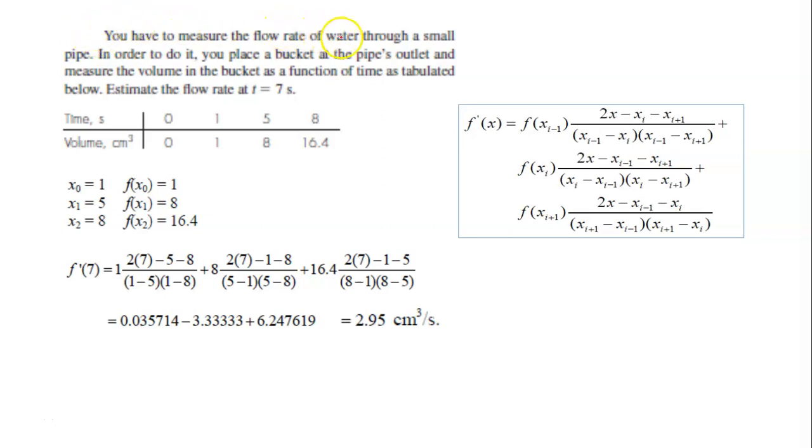This is one question related to numerical differentiation. The question is, you have to measure the flow rate of water through a small pipe. In order to do it, you place a bucket at the pipe's outlet and measure the volume in the bucket as a function of time as tabulated in this table.